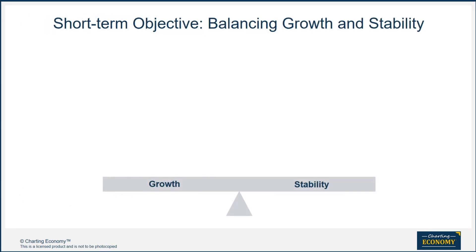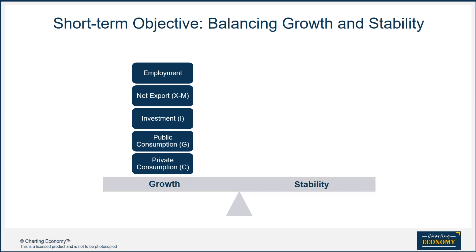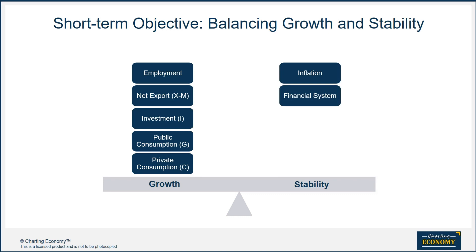The short-term objective of economic policymakers is to balance growth and stability. They can stimulate growth through four engines on the expenditure side: private consumption, public consumption, investment, and net export. Increasing employment is usually the immediate target for short-term growth stimulus policies. On the other side, policymakers have to watch out for inflation and other macroeconomic stability issues, such as the financial system's health, fiscal health, balance of payment, and the exchange rate.